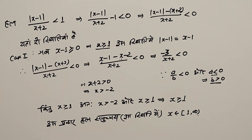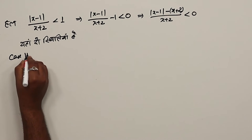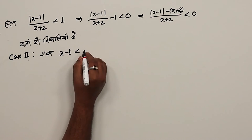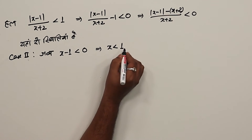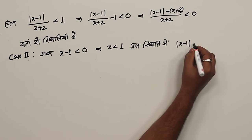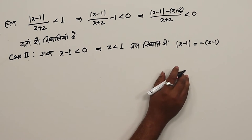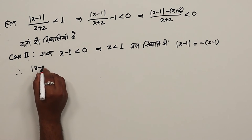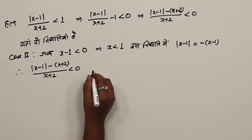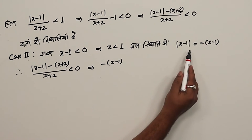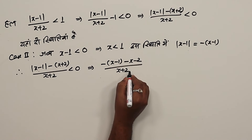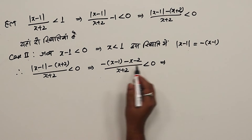यह पहली स्थिति हो गई। अब Case 2 देखते हैं जब x minus 1 is less than 0 होगा, तो इसका मतलब x is less than 1। इस स्थिति में mod of (x-1) का मान minus of (x-1) होगा। तो असमिका में minus of (x-1) minus (x+2) upon (x+2) is less than 0 प्राप्त होगा।